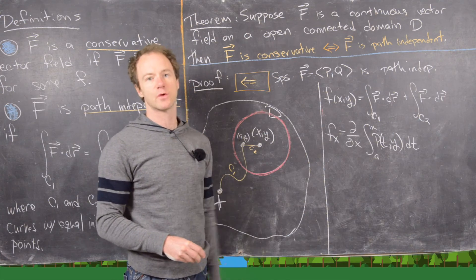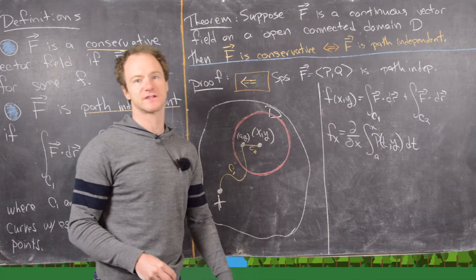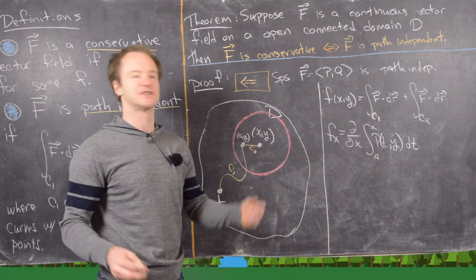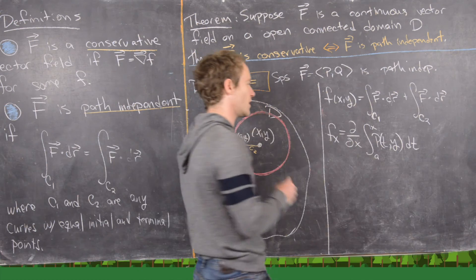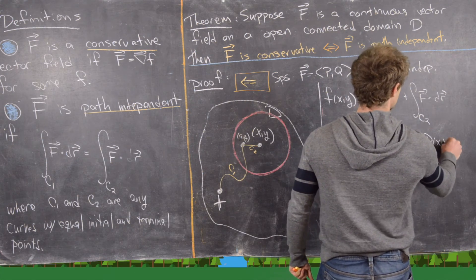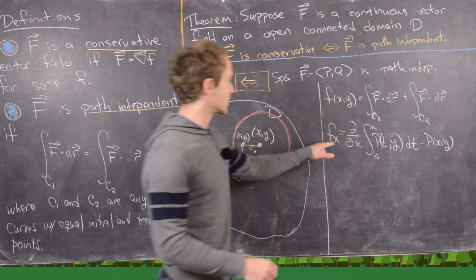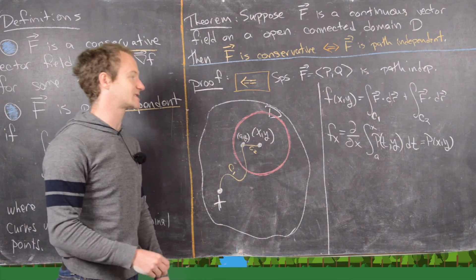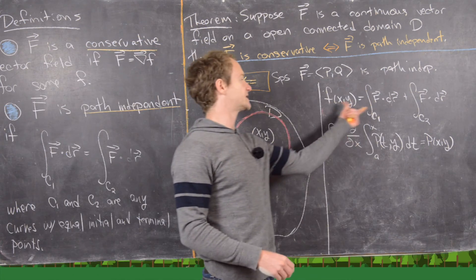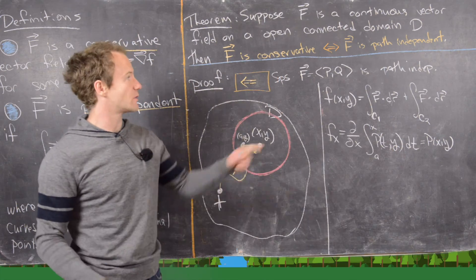By the Fundamental Theorem of Calculus Part 2, the partial with respect to x of the integral from a to x of P(t, y) dt is simply P(x, y). So the partial derivative of our constructed function little f with respect to x equals P(x, y), which is the first component of the vector field.